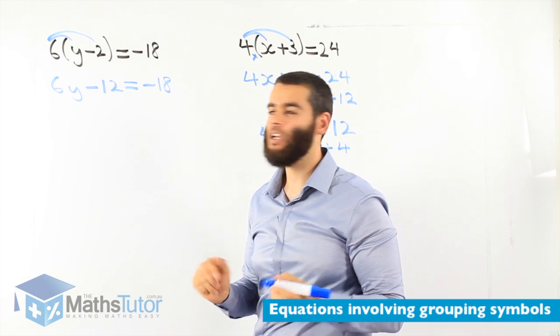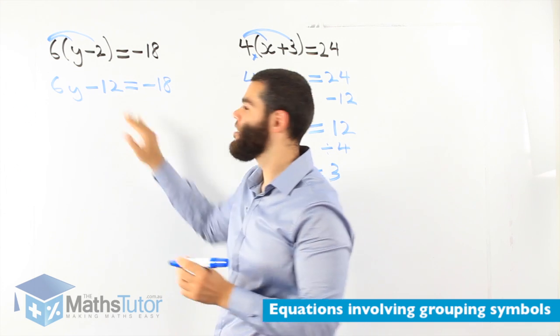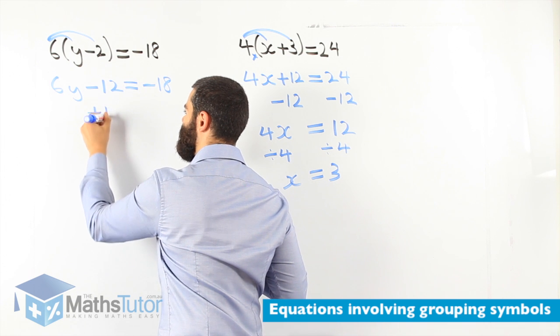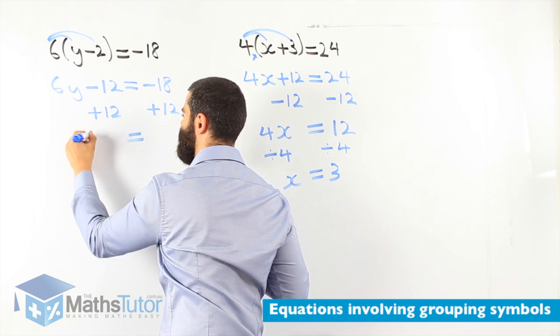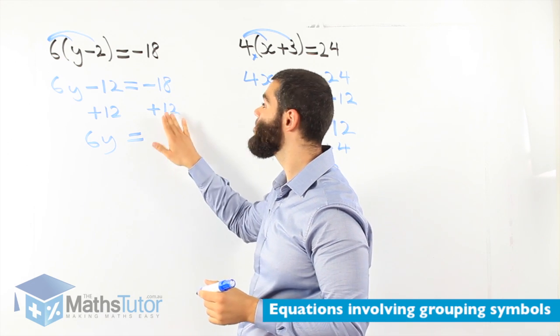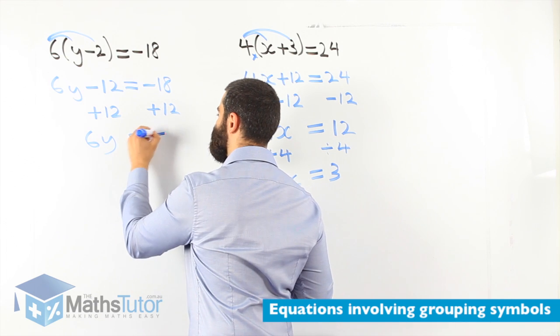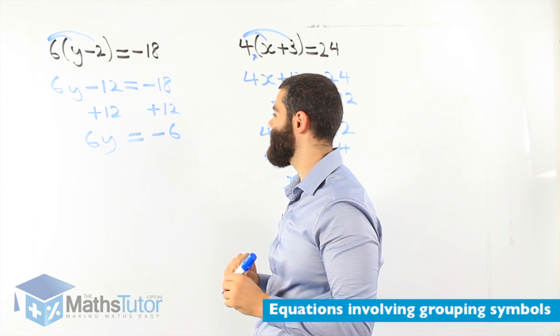What do we do now? Our simple equation. We know we are going to get rid of the negative 12 first. So, we add 12 and we add 12 on the other side. So, we're left with 6y. Negative 12 plus 12 is gone. Negative 18 plus 12 is negative 6. So, 6y equals to negative 6.